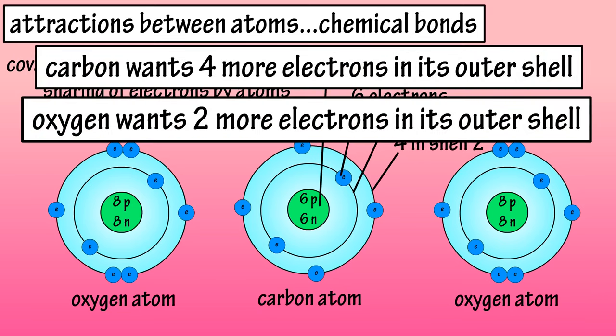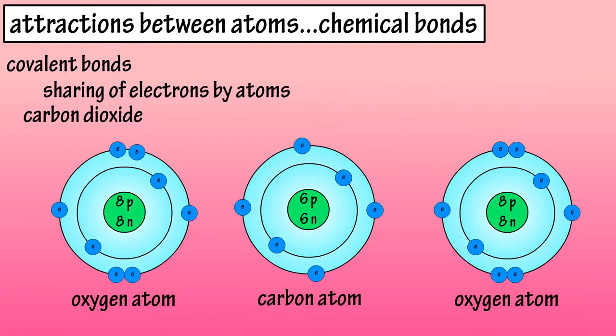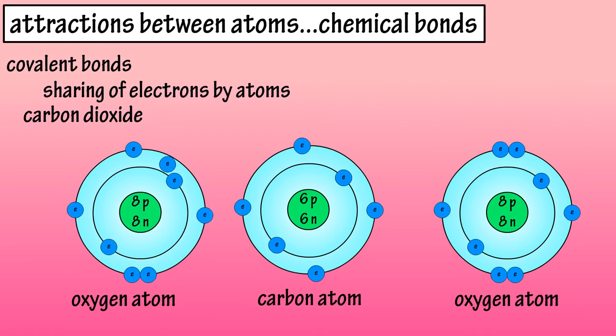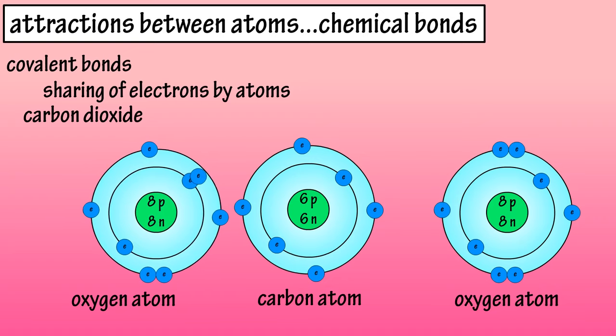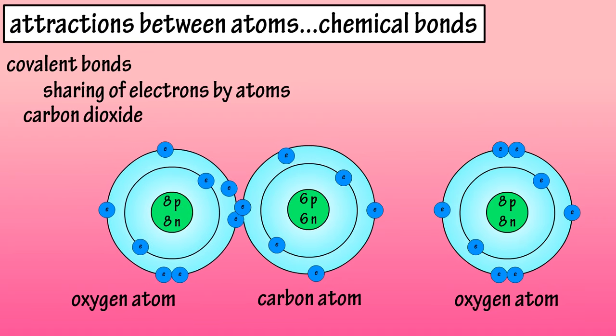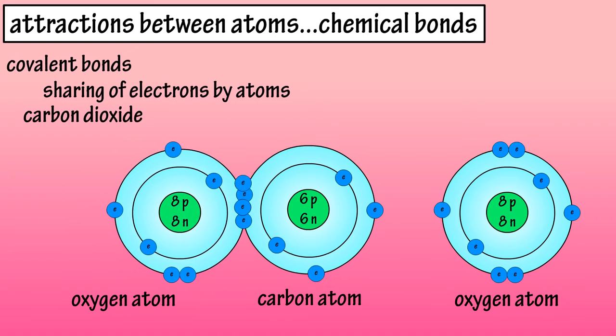These fellows can make each other happy by sharing what they have. Oxygen atom number 1 can share 2 of its electrons with the carbon atom, and in return the carbon atom can share 2 of its own electrons with oxygen atom number 1, making oxygen atom number 1 happy.